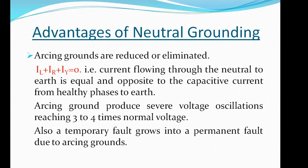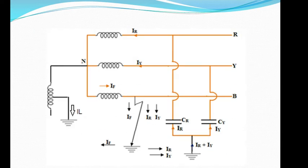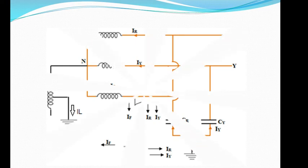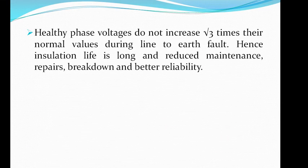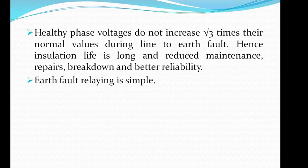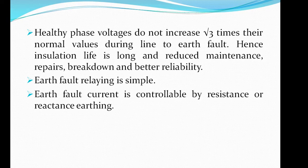Here, a fault has occurred at phase B, so phases R and Y are the healthy phases. The fault current flowing through the neutral path is iL, such that iL + iR + iY = 0, meaning the vector summation equals zero, so the arcing ground phenomenon can be eliminated. Healthy phase voltages do not increase by root three times their normal values during a line-to-earth fault, hence insulation life is longer with reduced maintenance, fewer breakdowns, and better reliability. Earth fault relay design is very simple for a grounded system, and earth fault current is controllable by resistance or reactance earthing.